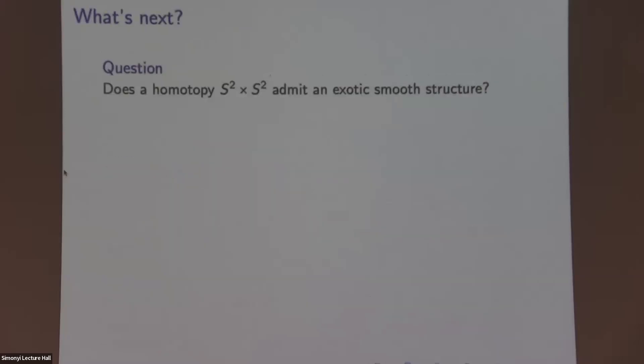So what's next? I am interested in this question: does a homotopy S2 times S2 admit an exotic smooth structure? I'm not going to start with smooth topology when I know that. So this is also pretty mainstream, but to be honest, this is beyond my expertise, but we can ask if having a symplectic structure on it restricts the smooth type.